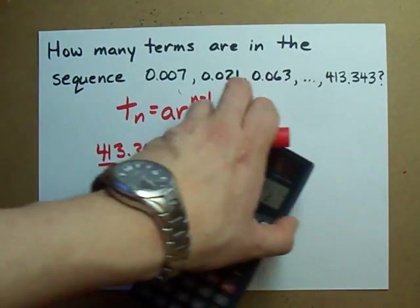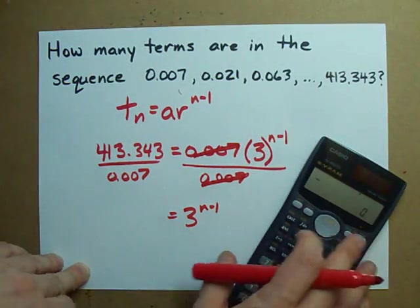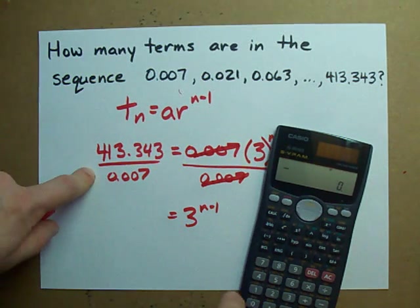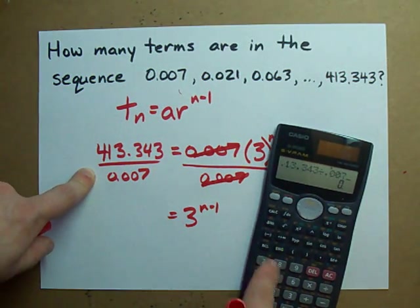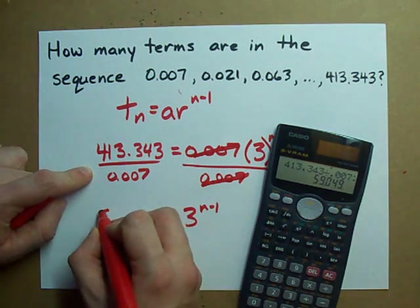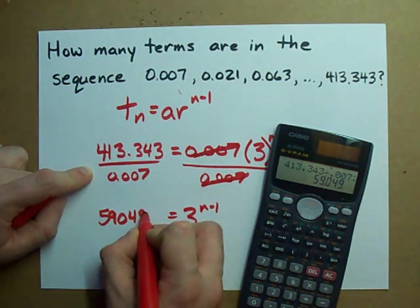It simplifies that side a little bit. And according to my calculator, the value of this is 413.343 divided by 0.007. I get 59,049.